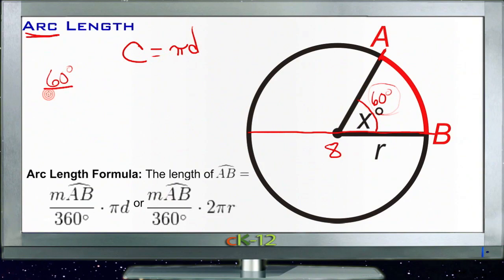we have 60 degrees out of the 360 that makes up the whole circle, and that reduces down to 1/6. So we have a sixth of the whole circle right here.